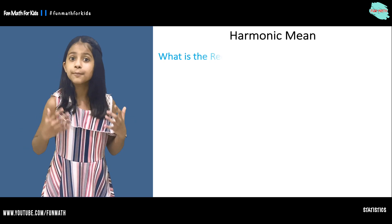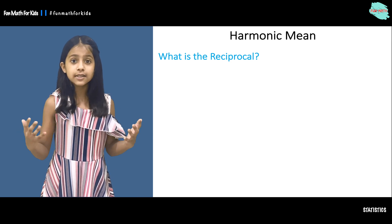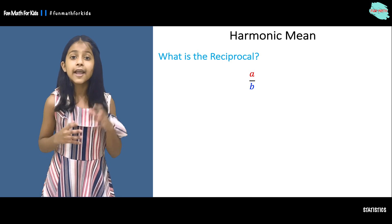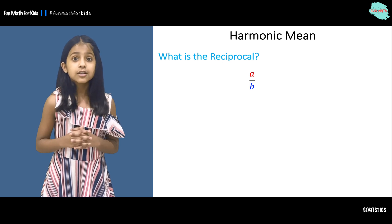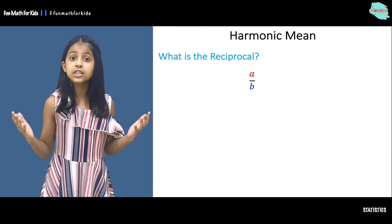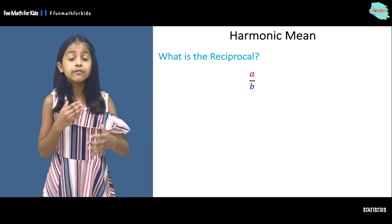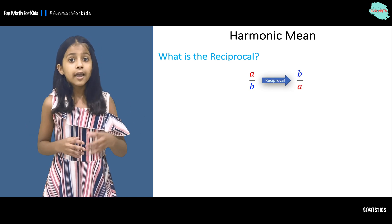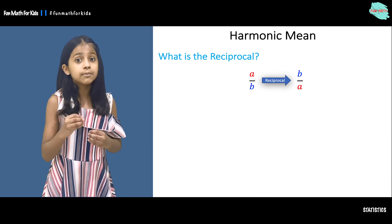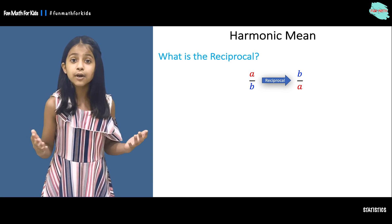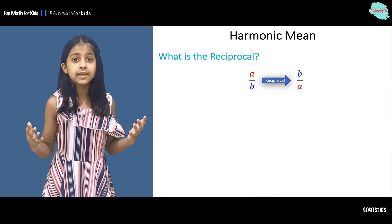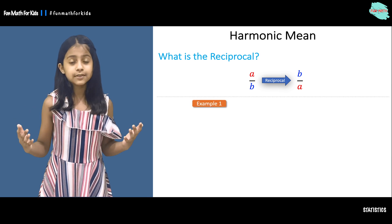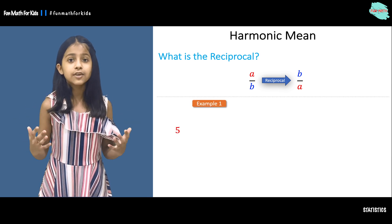Before we talk about how to calculate the harmonic mean, let's first understand what the reciprocal is. Here we have a fraction a over b, where a is the numerator and b is the denominator. To find the reciprocal of a over b, we flip the numerator and denominator around — the numerator becomes the denominator and the denominator becomes the numerator. So the reciprocal of a over b is b over a.